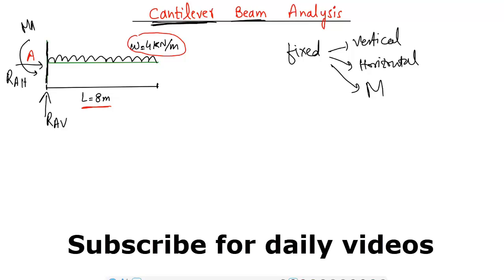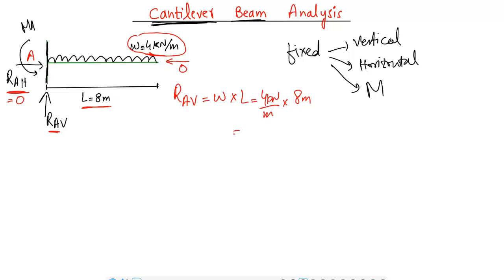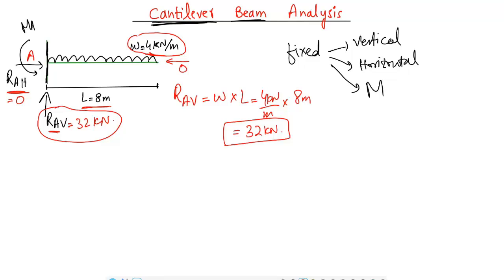Now let's find the support reactions. R_A horizontal equals zero because there is no horizontal or inclined load — only a vertical load of 4 kN/m is acting. To find the vertical reaction, R_A vertical equals W multiplied by the length: 4 kN/m × 8 m = 32 kN. So the support reaction is 32 kN, supporting the entire applied load.